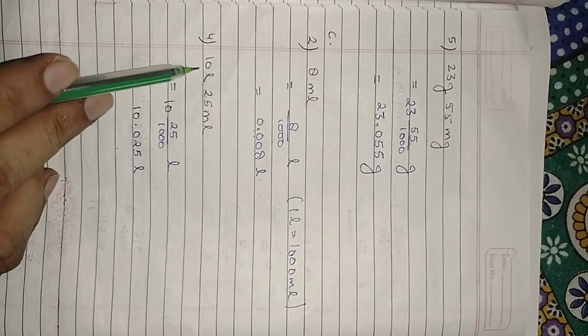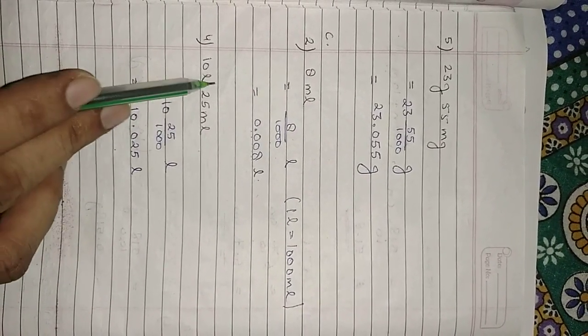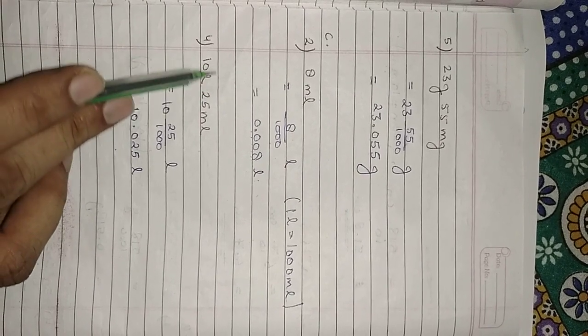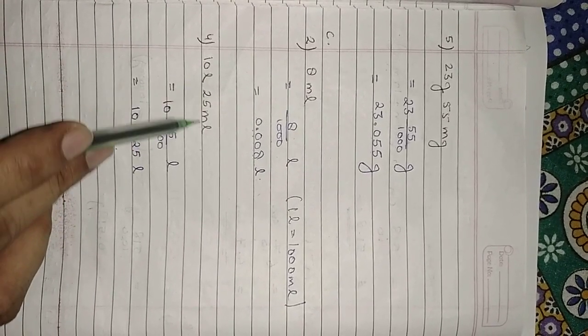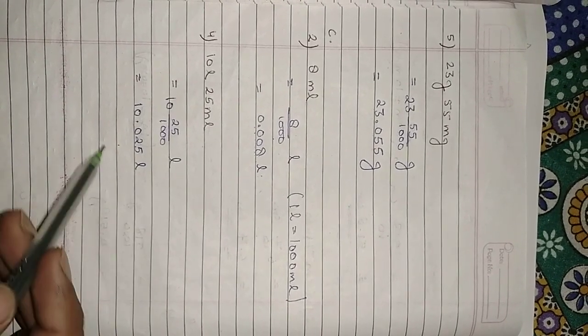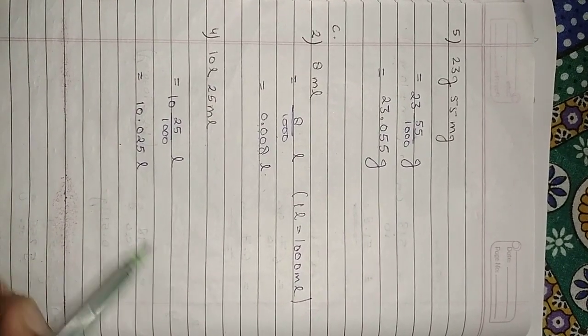Again: 10 liters 25 milliliters. The 10 is already in liters, so we only convert 25 milliliters into liters. We divide 25 by 1000 the same way as done for the previous milliliter conversion.